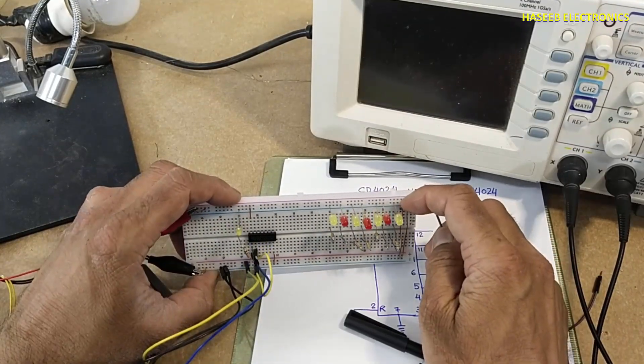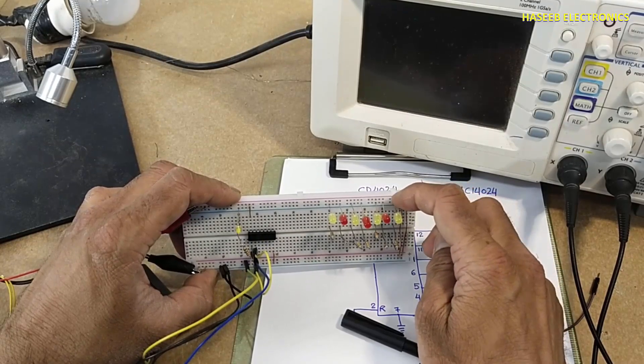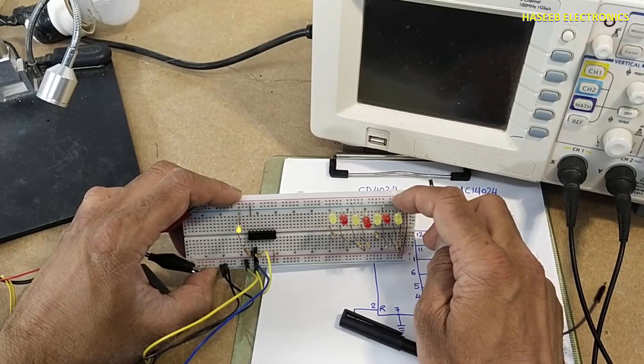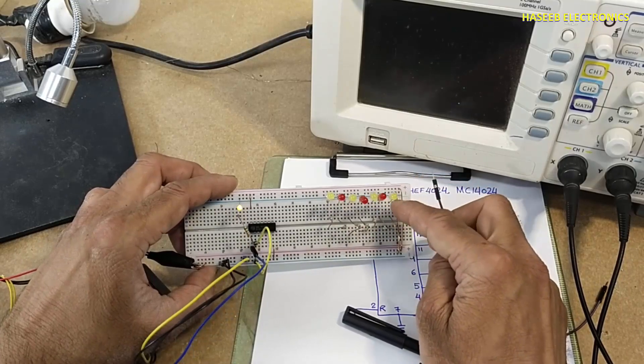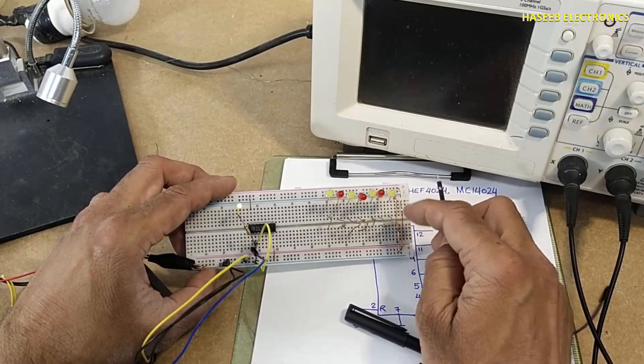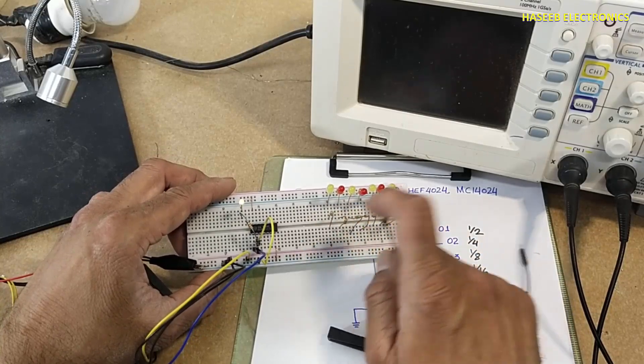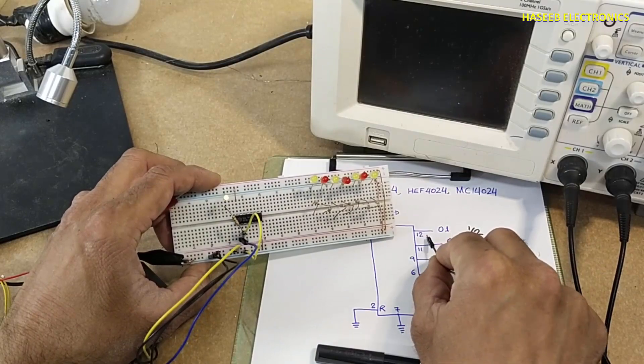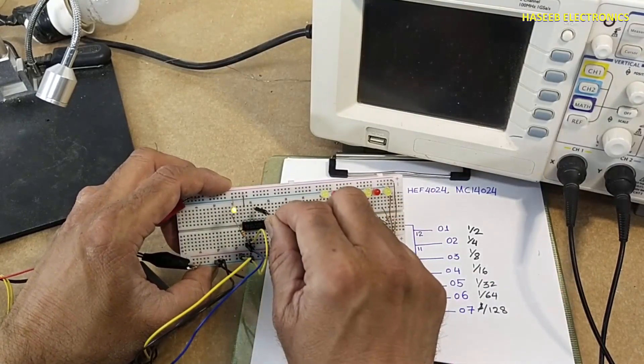In the output side, I connected LEDs to visualize the signal. Ground is connected at cathode, anode at 330 ohm resistor. 7 resistors because we are using 7 stages. Pin number 12 is output number 1. Pin 13 not connected.